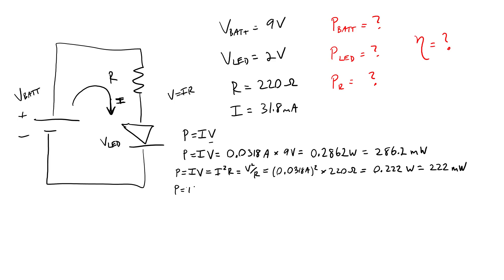Finally, for the LED, we again have P equals IV, 0.0318 amps times 2 volts equals 0.0636 watts or 63.6 milliwatts.